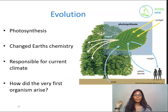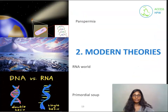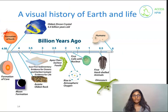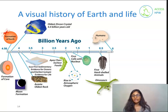How did the very first organism arise? We have three modern theories: panspermia, the RNA world hypothesis, and the primordial soup hypothesis. But before we get into that, we need to understand the history of life. The Earth was formed 4.5 billion years ago and the first evidence of life is seen in fossils that are around 3.5 billion years old. Fossils are really rare and hard to form, so we know that the first life emerged sometime before that.